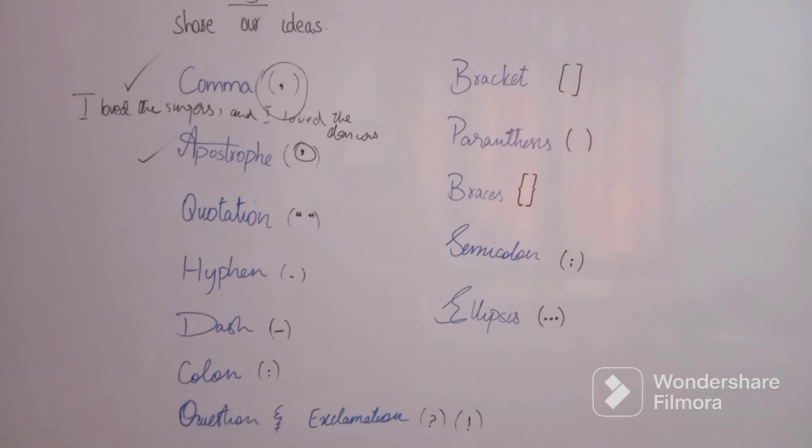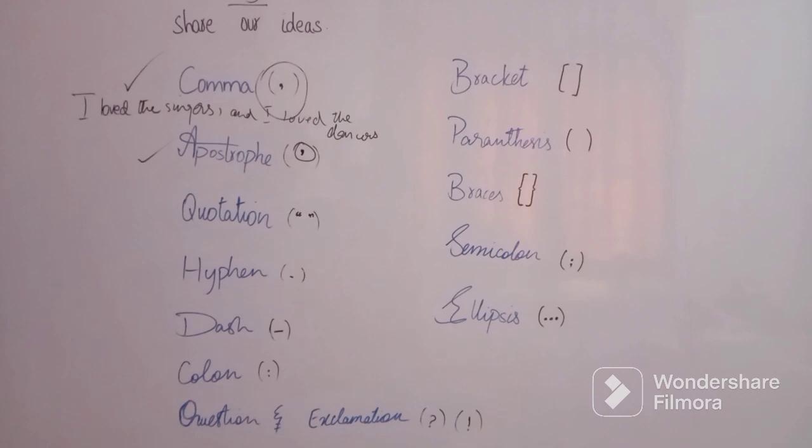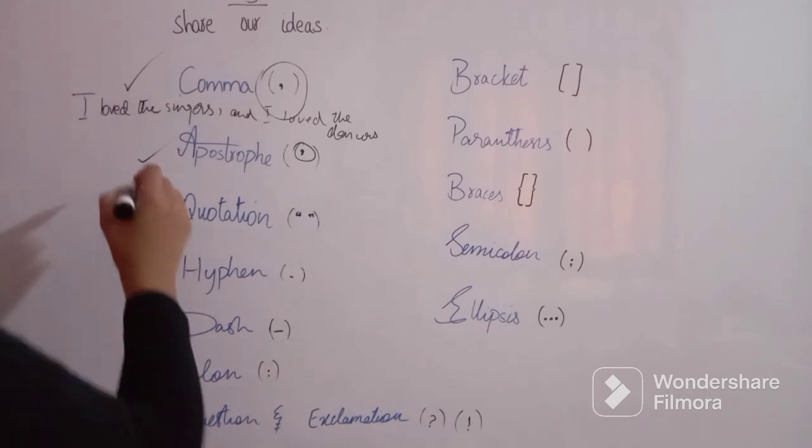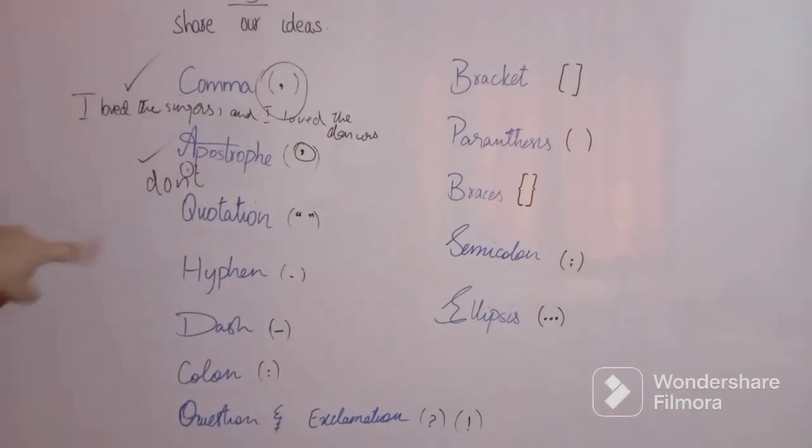They're used to denote a quotation mark in material that is already being quoted, like it was James's car that drunk driver hit, or James said, "If you come any closer, I'll call the police." We use apostrophe for contractions like don't. You can see the apostrophe right here. This is how we normally use apostrophe.